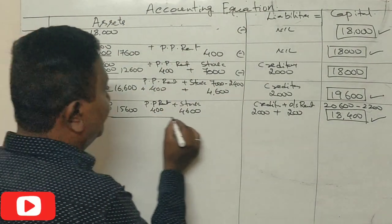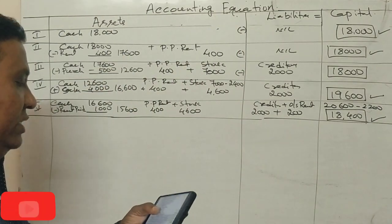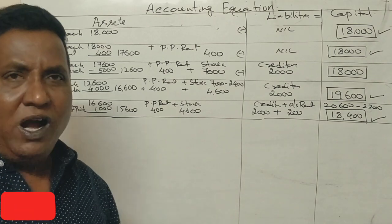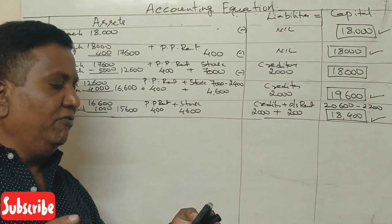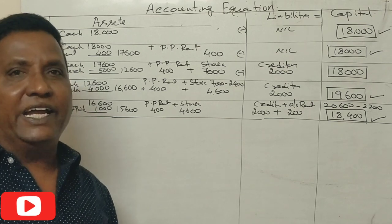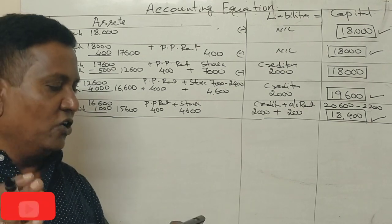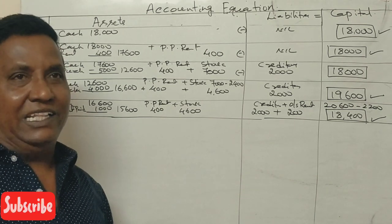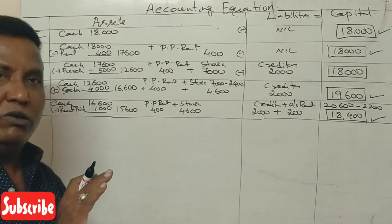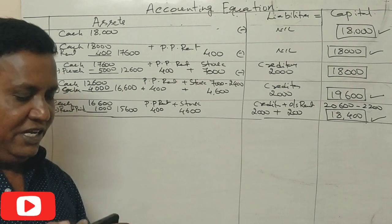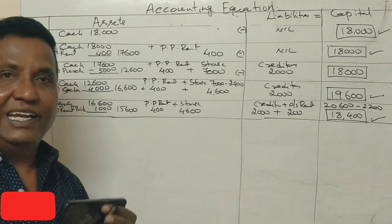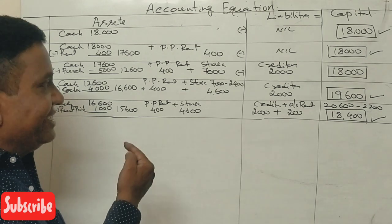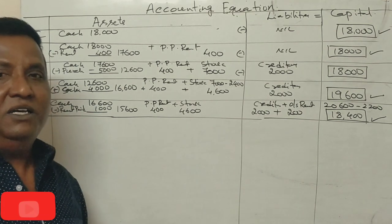Sixth transaction: bought motorcycle for personal use. This is a personal transaction — drawings. Personal transactions are not recorded in business books. Only business transactions get entries. So no entry is made for this transaction.